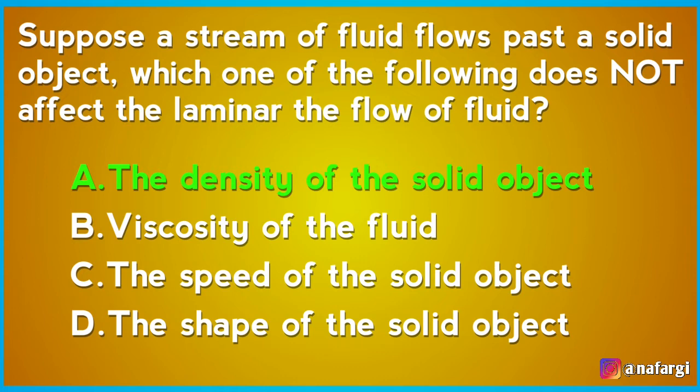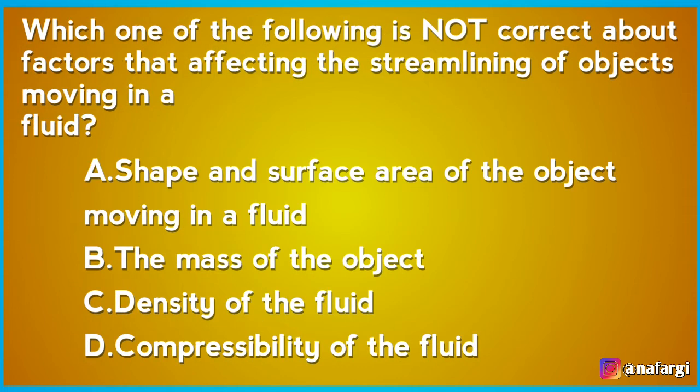Which one of the following is incorrect about factors that affect the streamline of an object moving in a fluid? A: The shape and surface area of the object. B: The mass of the object. C: The density of the fluid. D: The compressibility of the fluid. The mass of the object is incorrect as a factor.